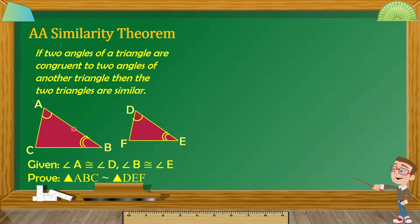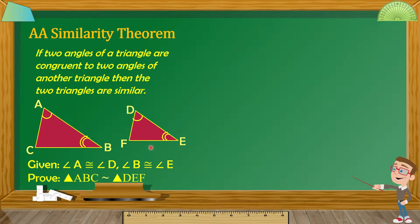Given here, triangle ABC and triangle DEF. Yung dalawang angles ni triangle ABC ay congruent sa dalawang angles ni triangle DEF. Kung i-apply natin itong AA Similarity Theorem, masasabi na natin na itong triangle ABC at triangle DEF ay similar triangles.